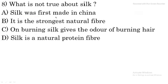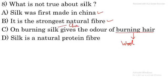Question: what is not true about silk? Silk was first made in China — the origin of silk is from China, so this statement is true. It is the strongest natural fiber — this is also true, because silk is the strongest among natural fibers. Burning silk gives the smell of burning hair — this is NOT true, because when we burn wool we get the smell of burning hair, but when we burn silk we get the smell of charred meat. So this option is not true about silk and is the right answer.